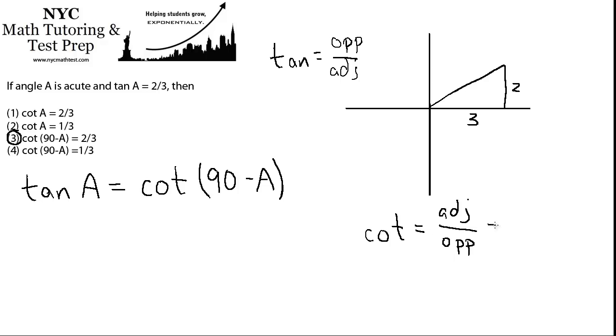So we want the adjacent to be two, and the opposite to be three, instead of the case of this first triangle, where the opposite was two, and the adjacent was three. So what would that triangle look like?